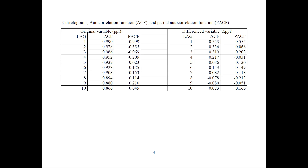The next thing we can do is look at the correlograms — the ACF and PACF. Here I have copied these from Stata, showing the original variable and the difference variable. On the original variable, we notice a very slow decay on the ACF, again indicating non-stationarity. We have a very strong first lag on the PACF and then everything else cuts off. On the difference variable, we see a decaying ACF — that's good — and a very significant first lag on the PACF, then not so much significance. That probably indicates an AR process.